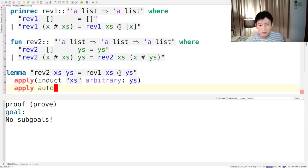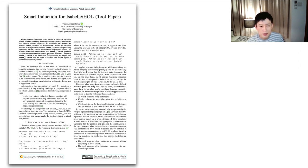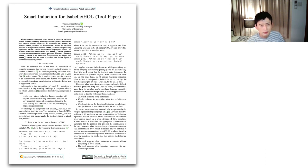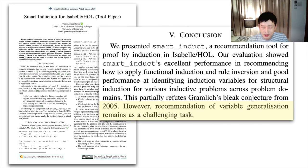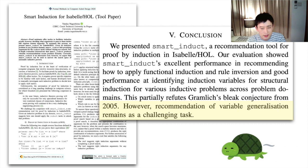Previously, we tried to automate this process by building a tool that takes an inductive problem and returns a list of promising arguments to the induction tactic. The tool is called SmartInduct. We evaluated SmartInduct using small inductive problems. The evaluation results were positive, but also revealed certain limitations of SmartInduct. Namely, SmartInduct can't predict variable generalization and it also tends to be slow for some cases.